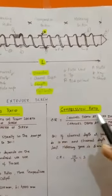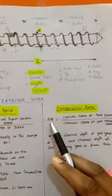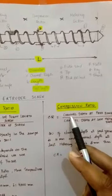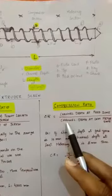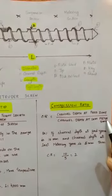What is compression ratio? It is the ratio of channel depth at feed zone to the channel depth at the last meter zone.